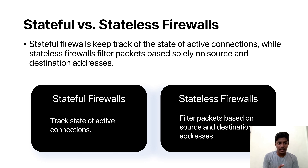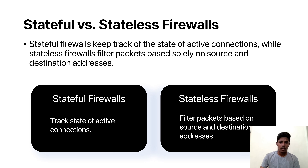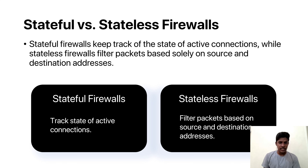A stateful firewall is essentially a smart, context-aware security guard for your network. Unlike simpler packet filtering firewalls, stateful firewalls keep track of the state of active connections. It remembers the context of the data flowing through it, so it's not just looking at individual data packets — it's also aware of the overall conversation. Imagine it as a bouncer who not only checks IDs, but also remembers who's already inside and what they are up to. This helps the firewall make more informed decisions, knowing if a data packet is part of an established connection or a potentially malicious one. This statefulness adds an extra layer of intelligence, making the firewall more effective in understanding and controlling the flow of data.